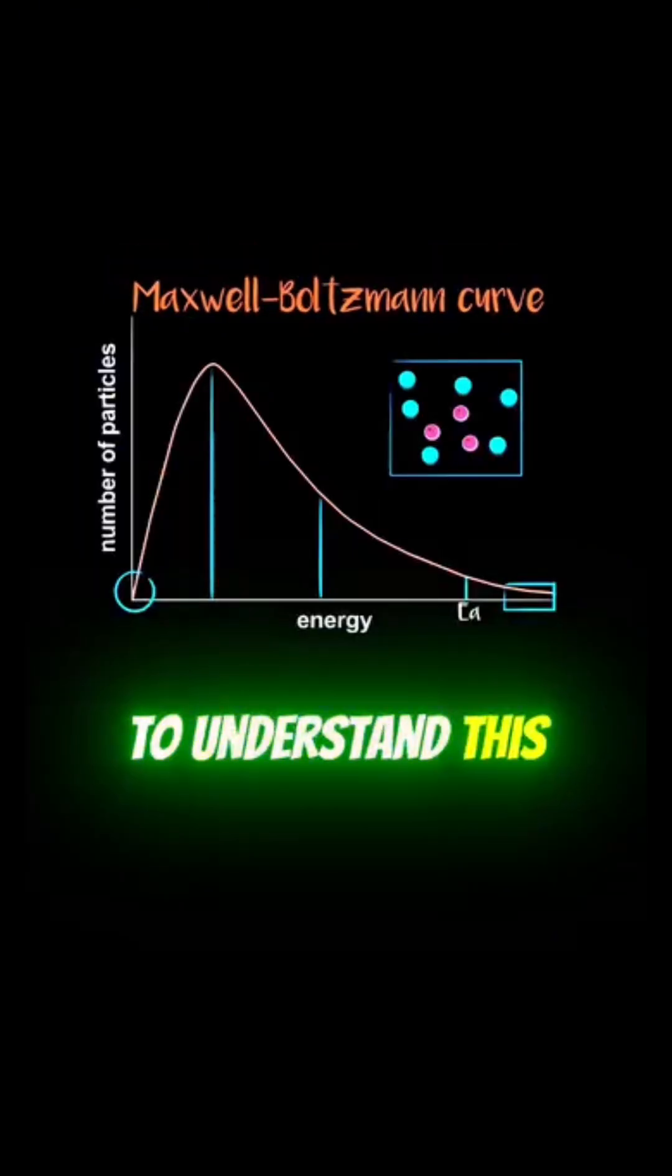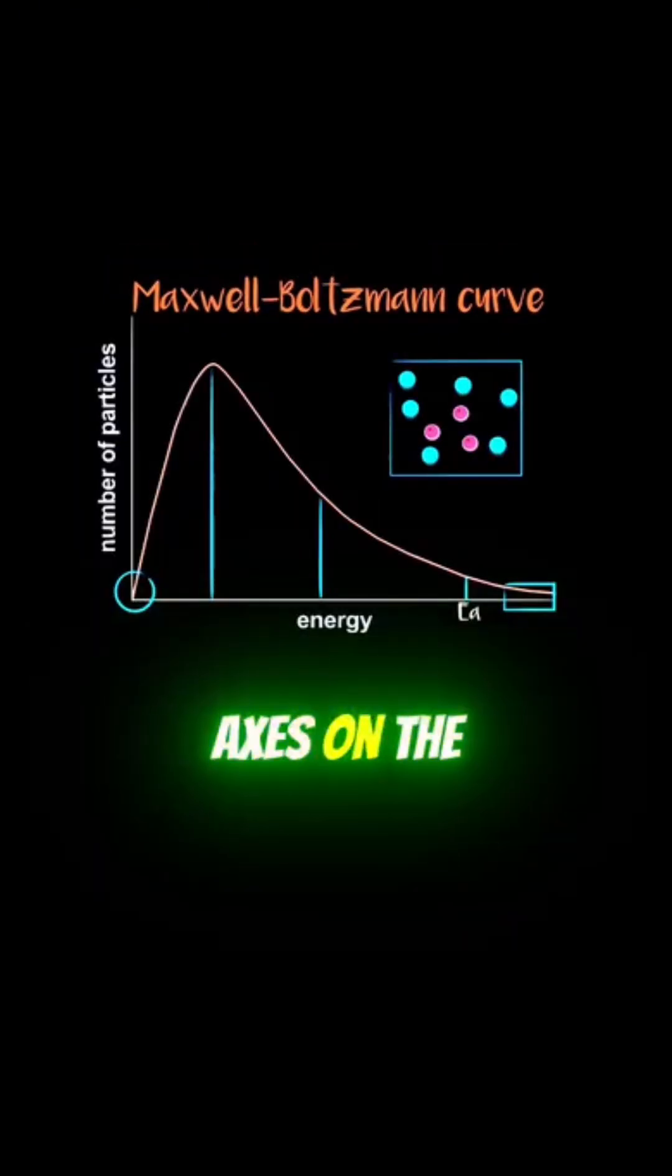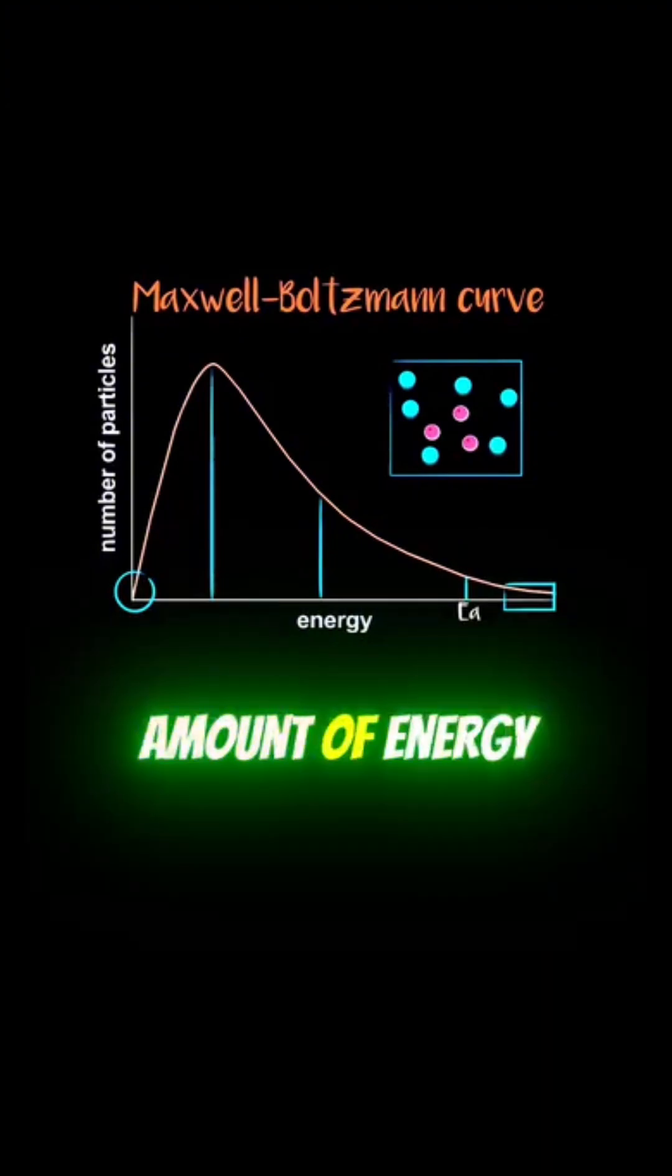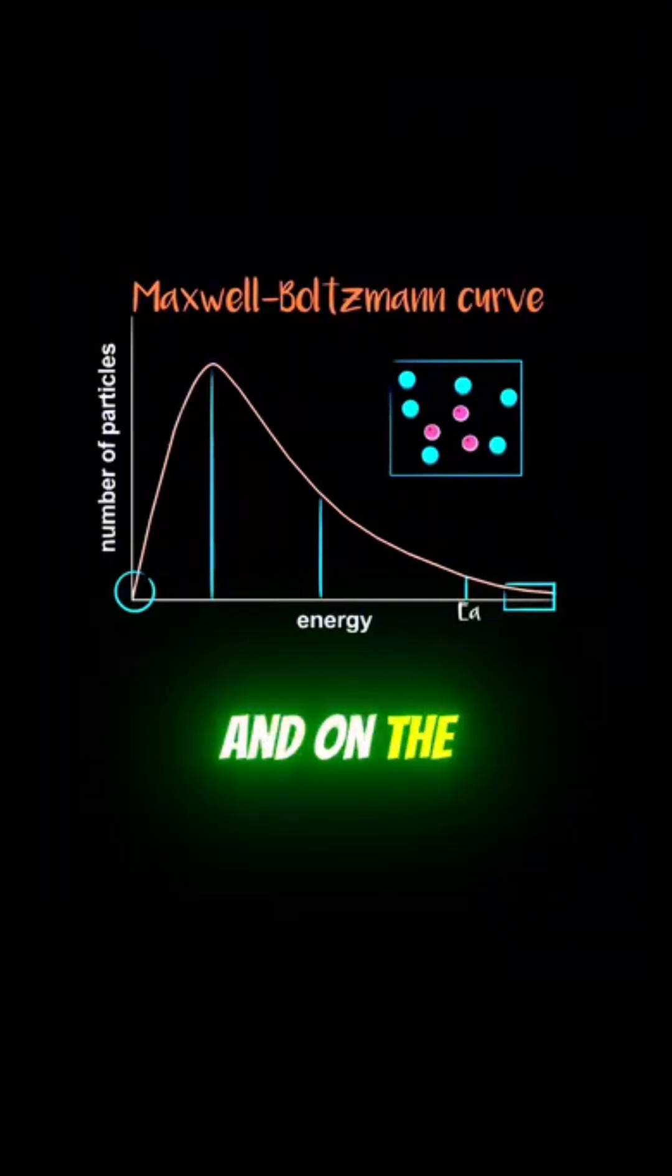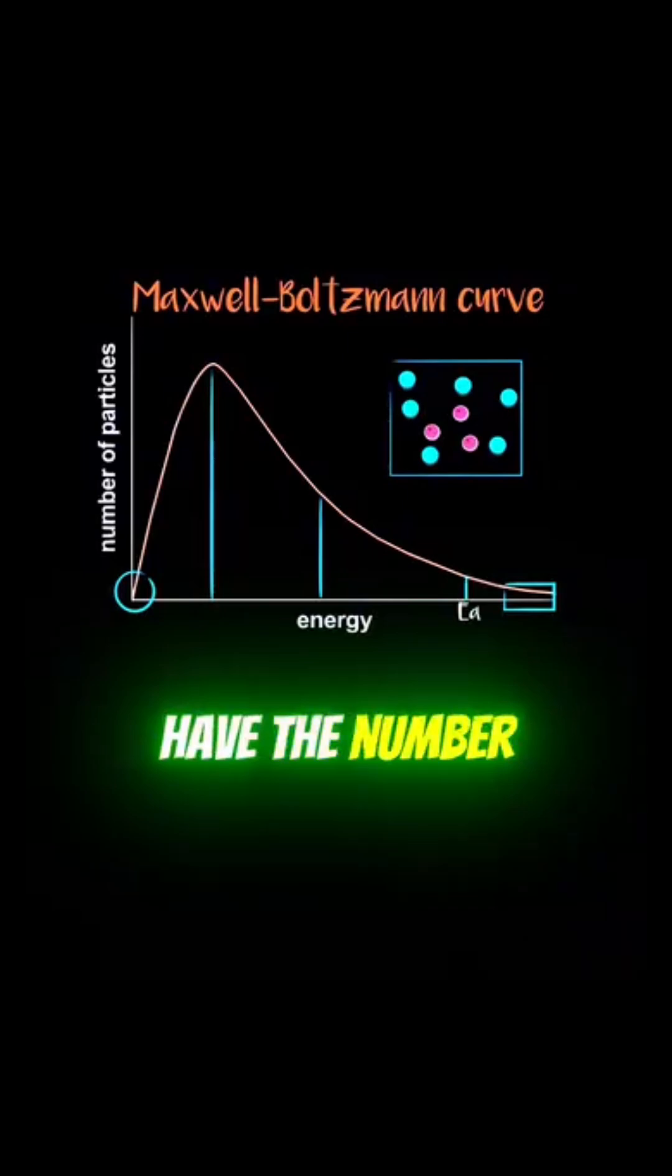The best way to understand this curve is to first look at the axes. On the x-axis you have the amount of energy that particles have, and on the y-axis you have the number of particles.